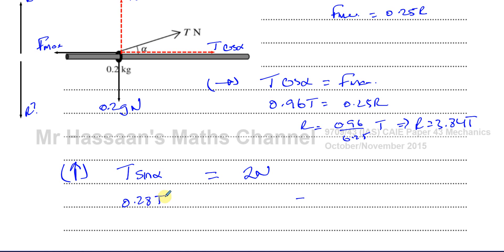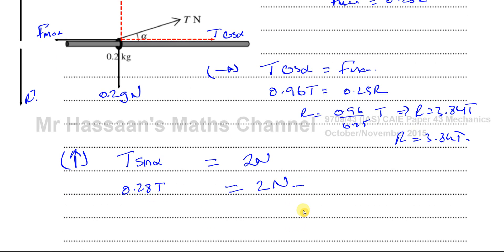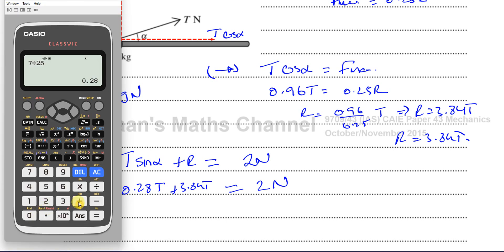So we can say 0.28 T. And on this side we're going to have two newtons. Now I know that r equals 3.84 T, and I know that the value of T has to be positive. I've taken right as positive. These have to balance out. If I put the 3.84 on this side, I'm going to end up with a negative value of T. If the reaction was acting downwards, I'd put 3.84 on this side and I'll get a negative value for T. Therefore, I must put the r on this side so that it balances out. So this is going to be 3.84 T. I know now I'm going to have a positive value of T, which makes sense.